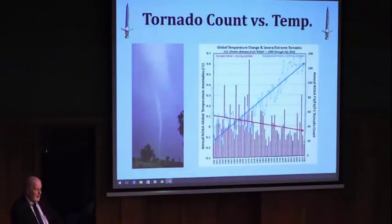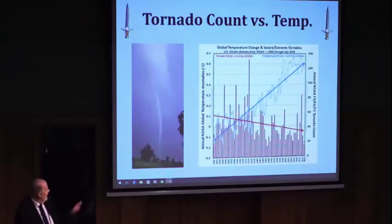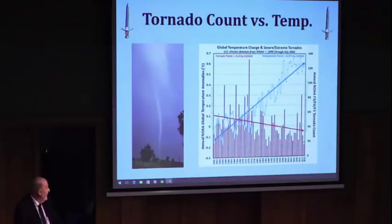This is temperature versus CO2 — same effect. Temperature goes up, CO2 — excuse me — tornado activity goes down. Inverse correlation again, but not causation.